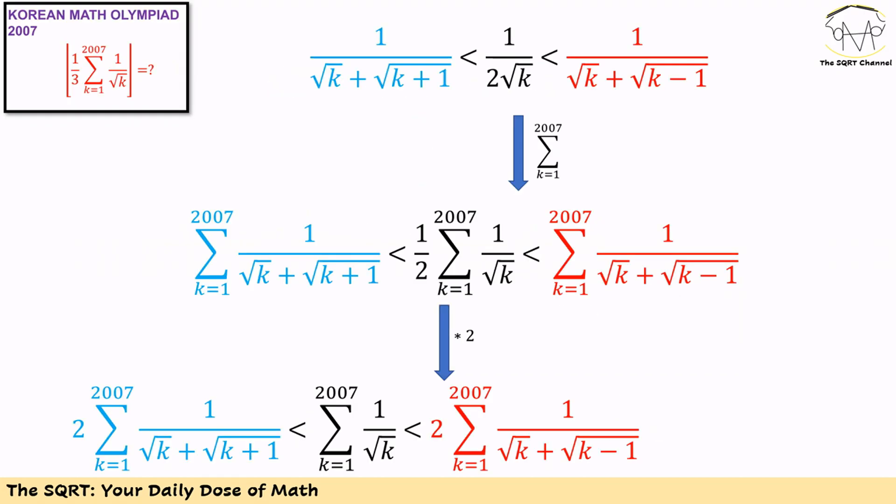Now we have a nice inequality and we need to shape it to be similar to what we had in the original expression. To do this, we need to apply two steps.